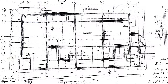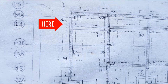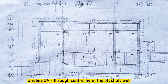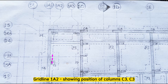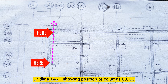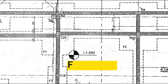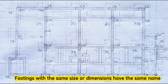This is the foundation layout, and as you can see, our building starts from grid line 1A, which passes through the center line of the lift shaft wall, and grid line 1.5 passes through the center line of another wall. Grid line 1A passes through the lift shaft wall center line; grid line 1A1 shows the center line of the wall; grid line 1A2 shows the position of columns C3; and grid line 1A1 also shows columns C4, C3, and C2E — all three columns will be in a single footing. F means footing and C means columns.